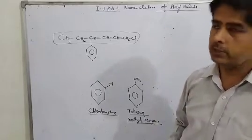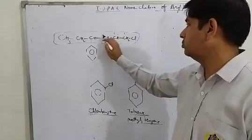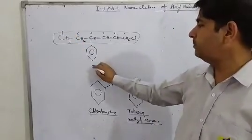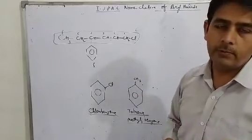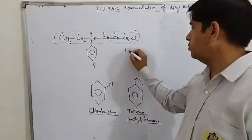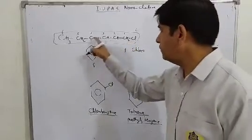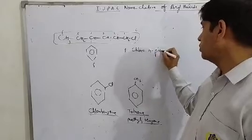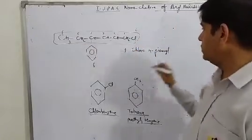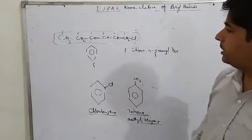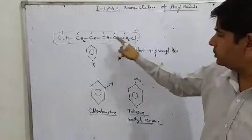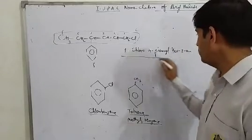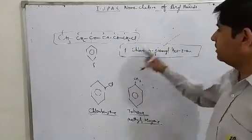In that case you use phenyl and mention the position. Using numbering 1, 2, 3, 4, 5, 6: phenyl is 'P' and chlorine is 'C' — C comes first alphabetically, so chlorine gets position 1 (1-chloro), and phenyl is at position 4 (4-phenyl). The chain has 6 carbons (hex) with a double bond at position 2 — so the name is 1-chloro-4-phenyl-hex-2-ene.